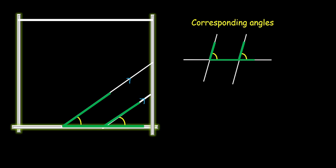So I just need to look for an F-shape and make sure that the corresponding angles are equal, which will assure me that these lines will be parallel to each other. Now this F-shape can be a normal looking F, upside down F, inverted F, rotated F — any kind of F-shape.